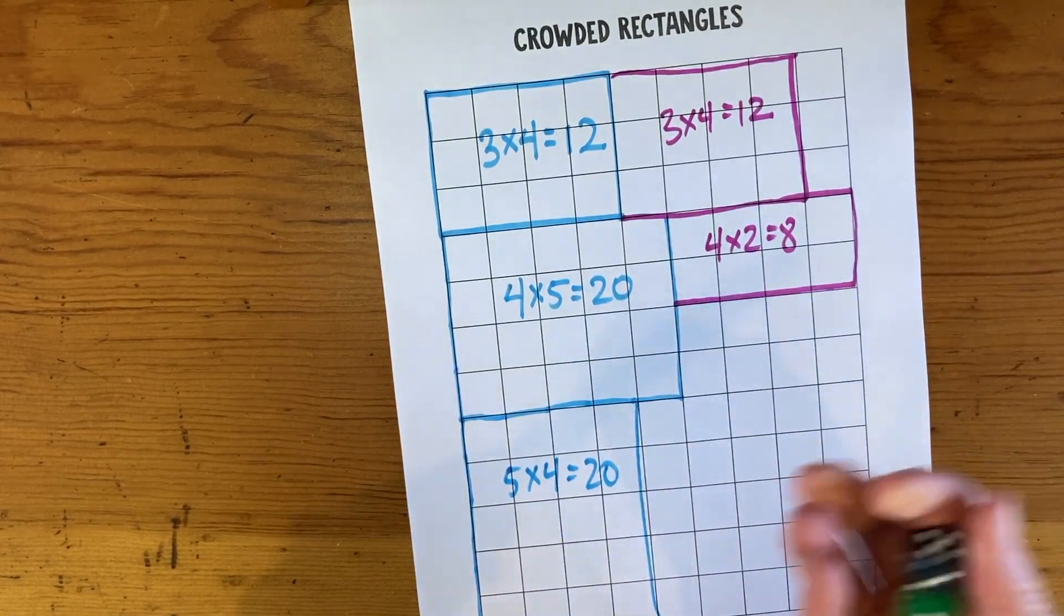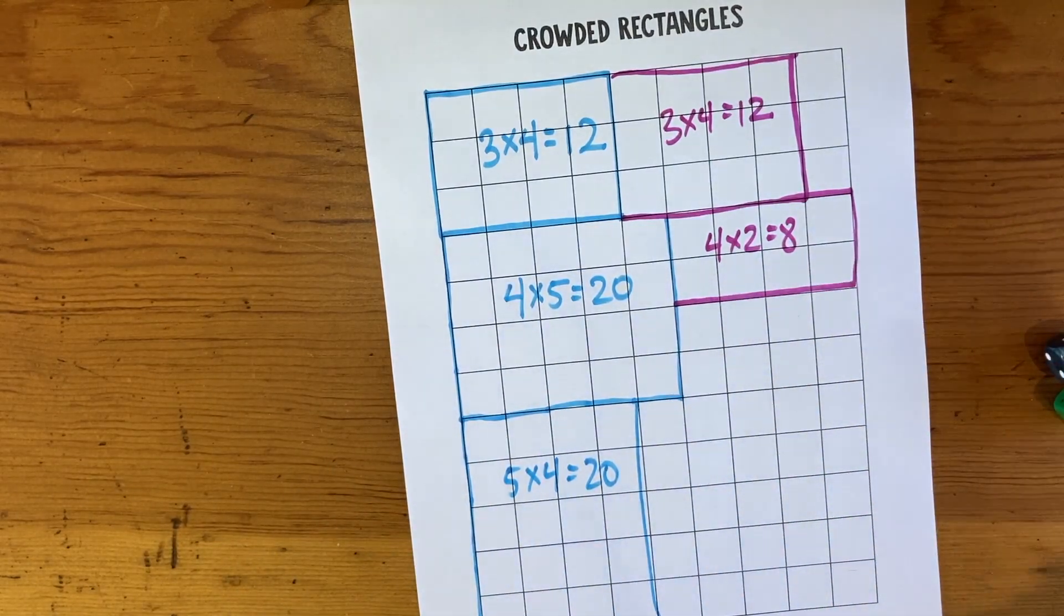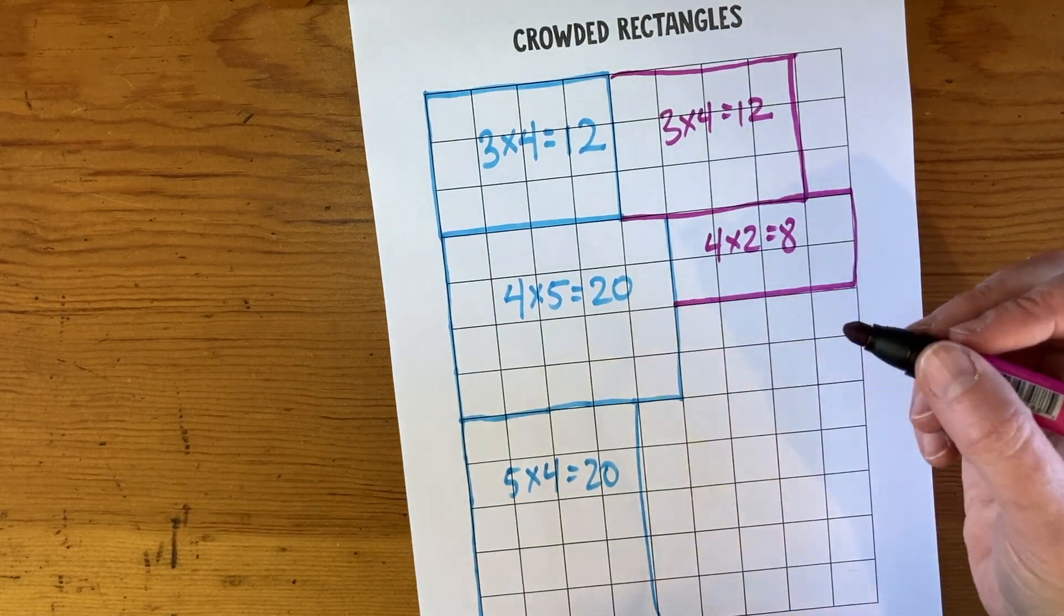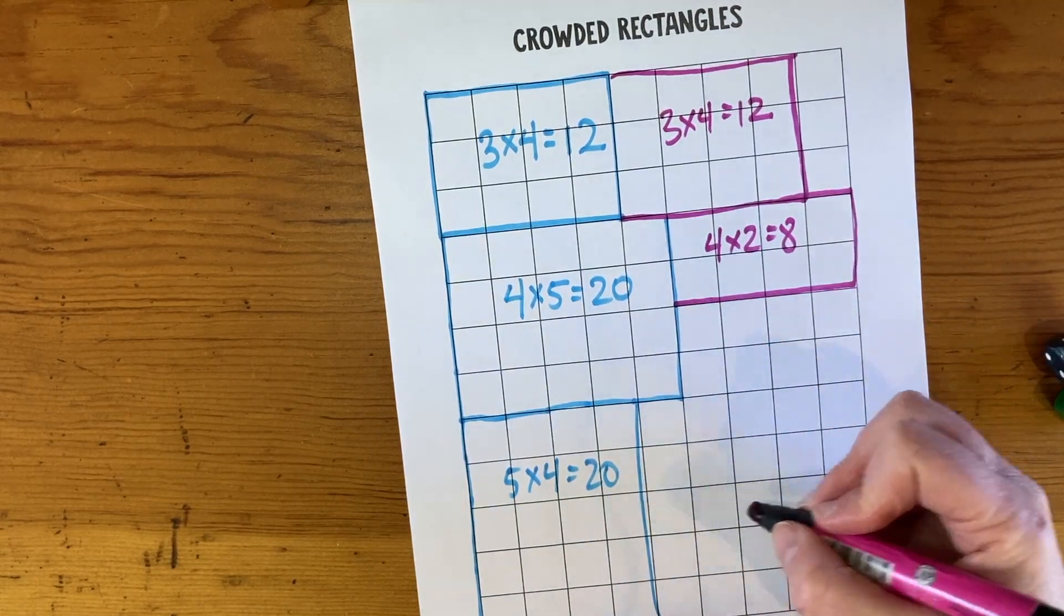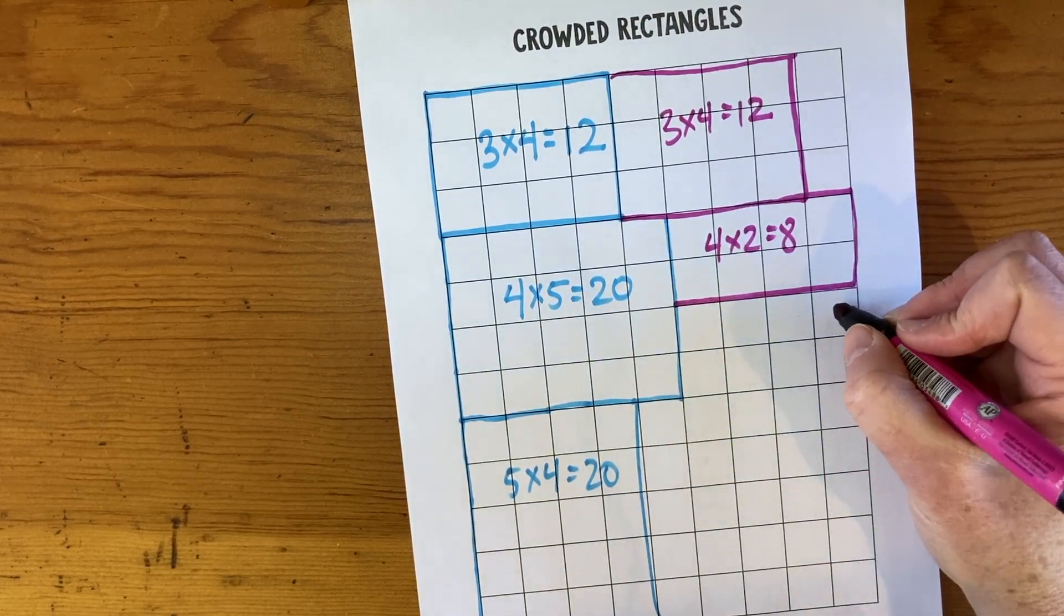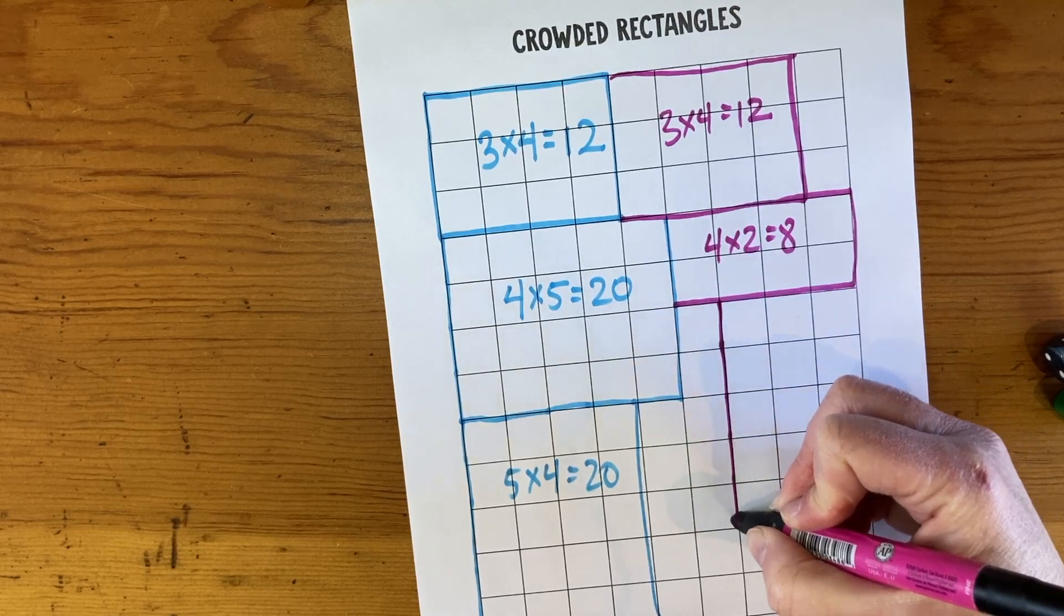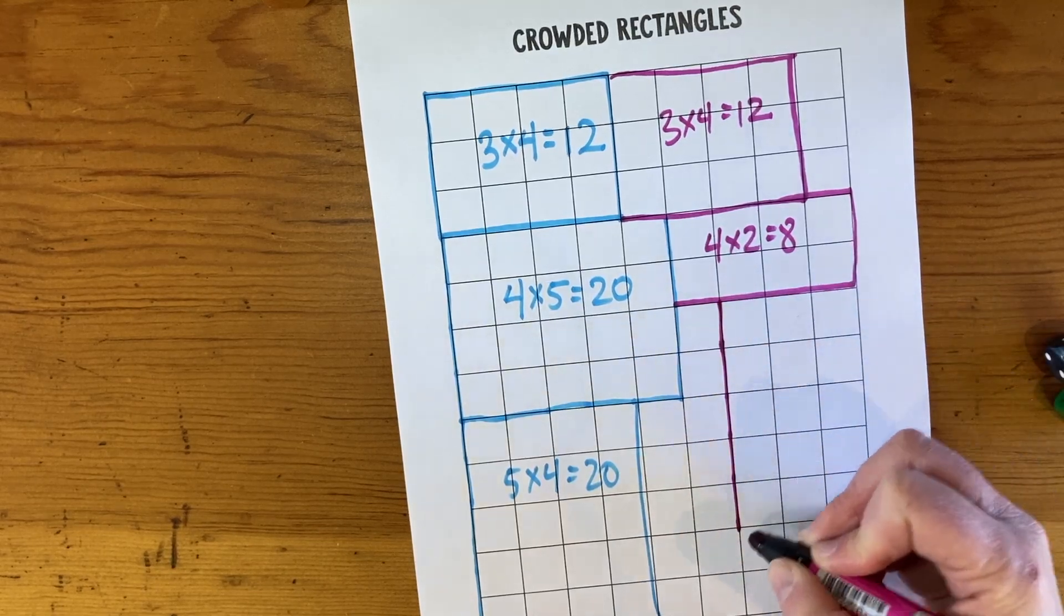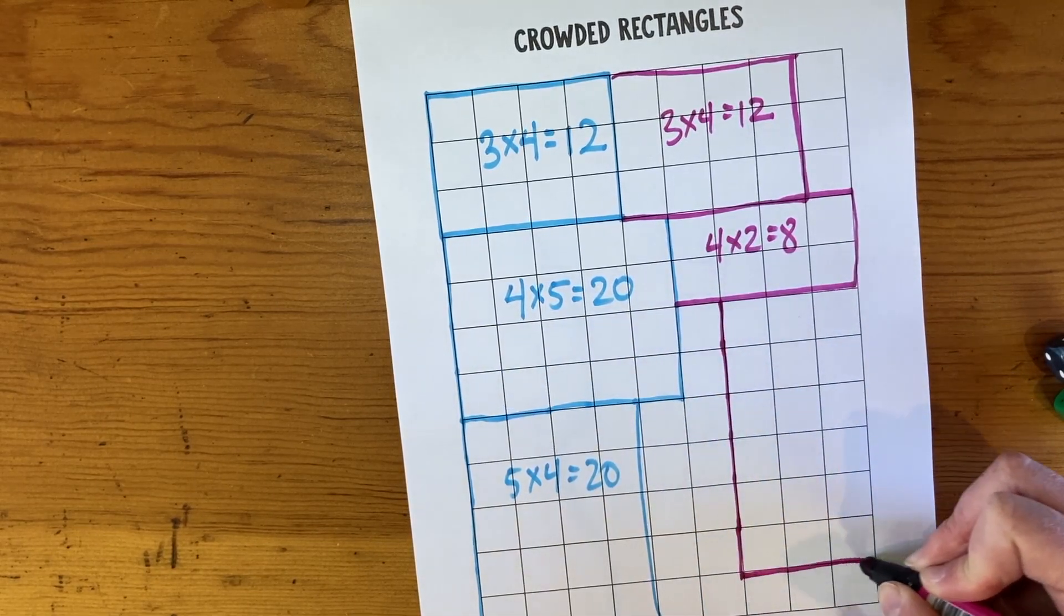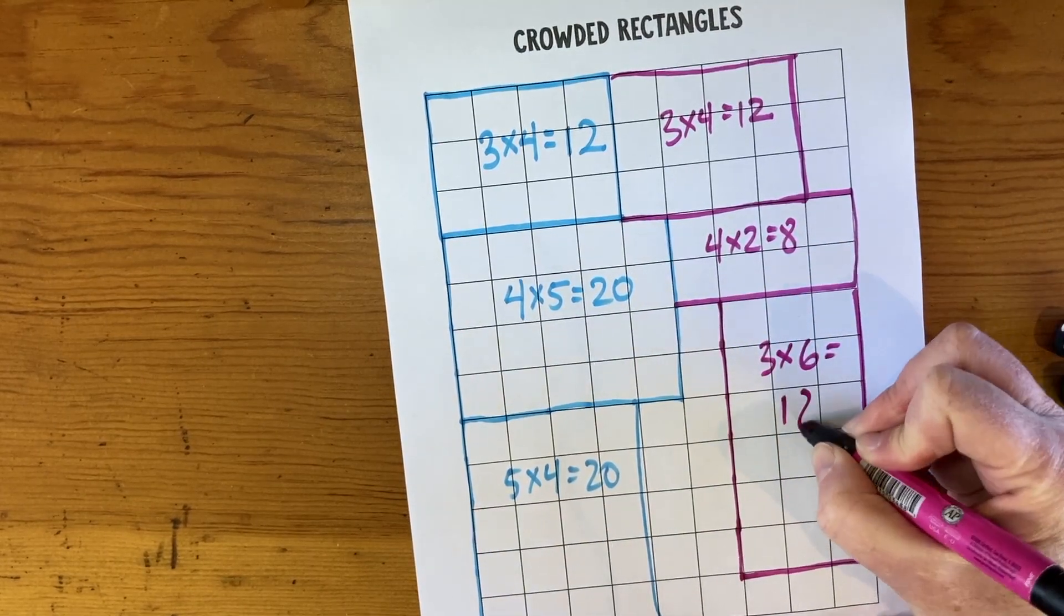Let's see if pink can get a big one. Three times six is 18. Let's see here. Let's do one, two, three, one, two, three, four, five, one, two, three, four, five, six. There's not much board left. Three times six equals 18.